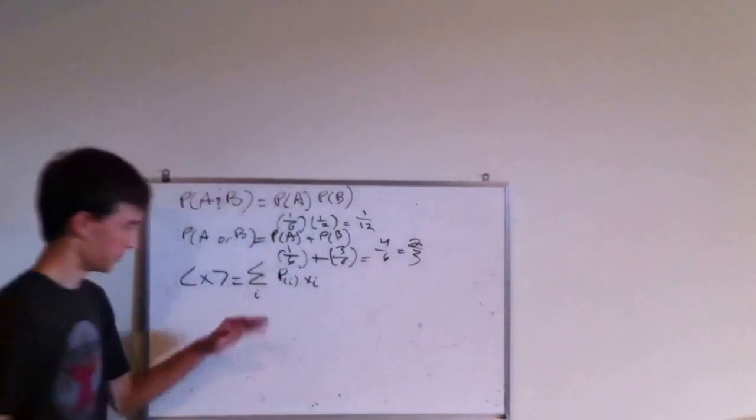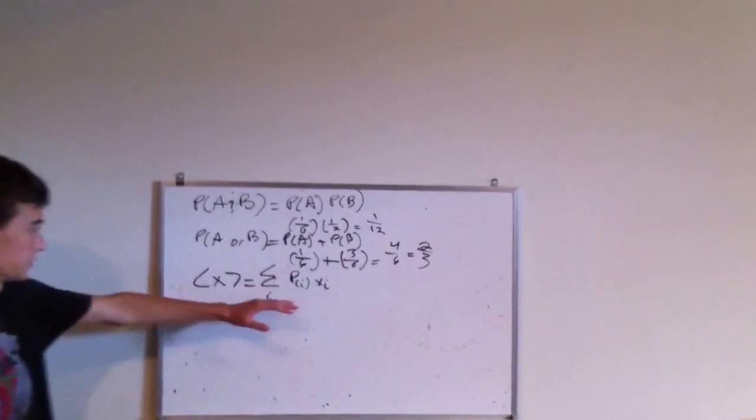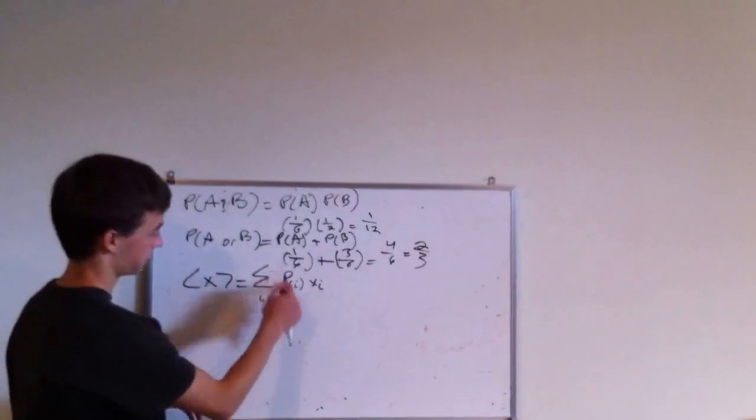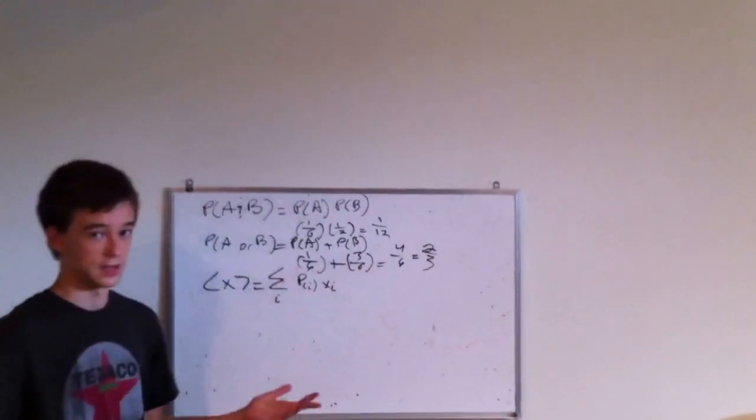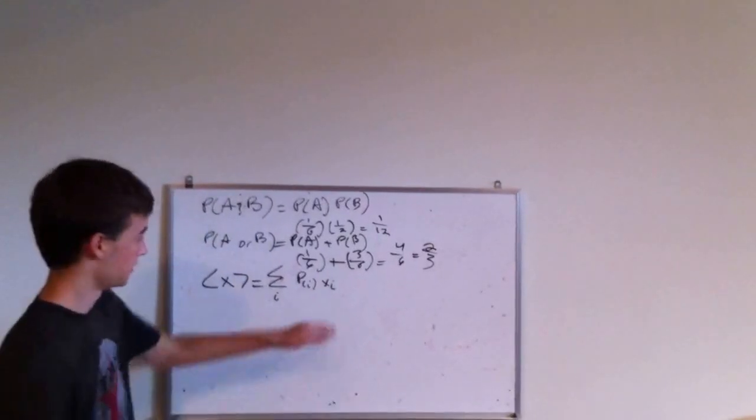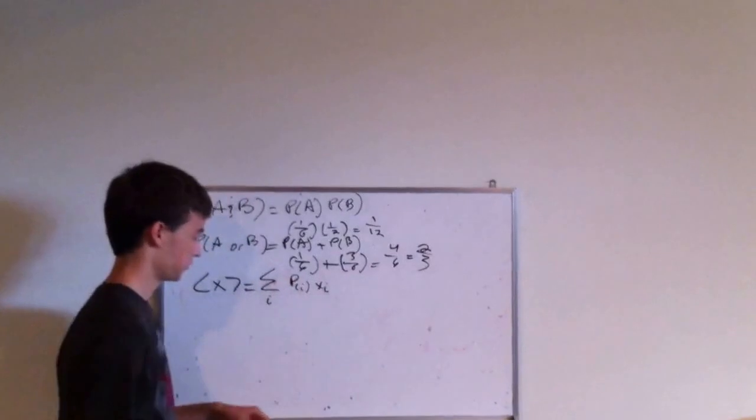Okay, now when you see an equation like this, many people get scared, but just bear with me. This is a sum, this is a probability of, say, getting flipping a head on a coin, and this is the number of trials, essentially. So for instance, you could say that I'm going to flip a coin four times.